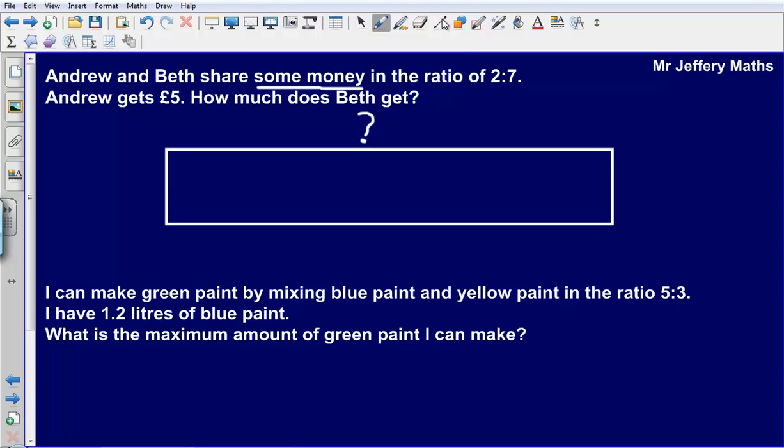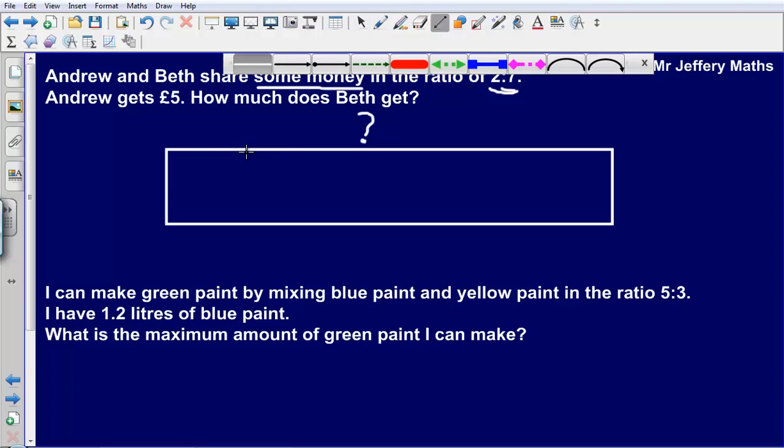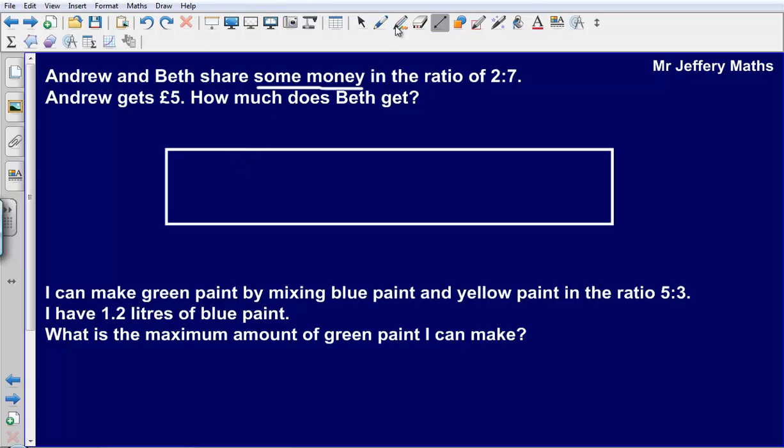However, we do know that this money was split into nine different parts and that two parts went to Andrew and seven parts went to Beth. So it's been split into nine parts. Let's first of all split this into nine parts to begin with.